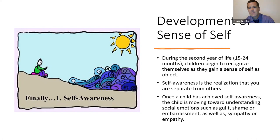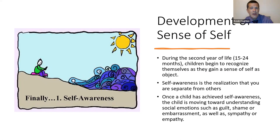Once a child has achieved self-awareness, they begin to understand social emotions such as guilt, shame, or embarrassment, as well as sympathy and empathy. Just think about how as you grow and get smarter, you become aware of other people's feelings — and all of a sudden you feel guilty because you took their toy, and kids struggle with sharing but then learn to share. We are social creatures. It's built into us to find ways to get along with each other.